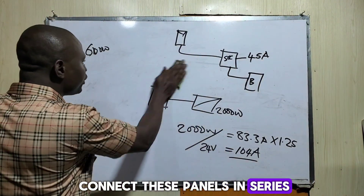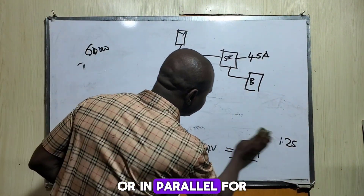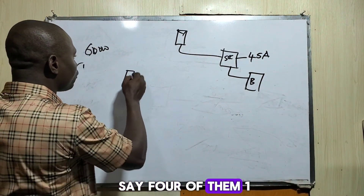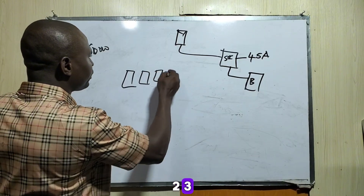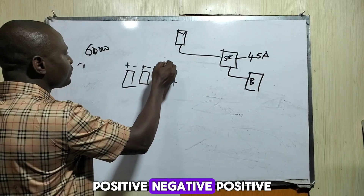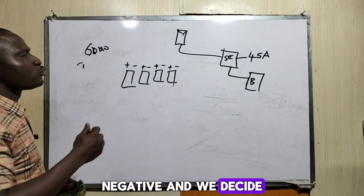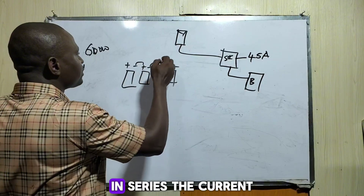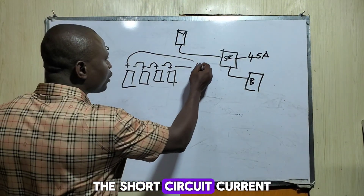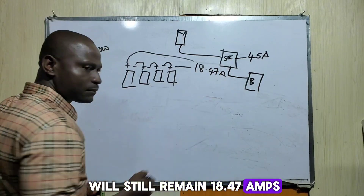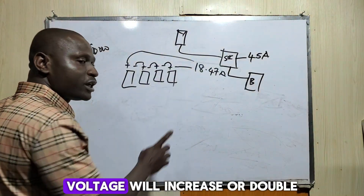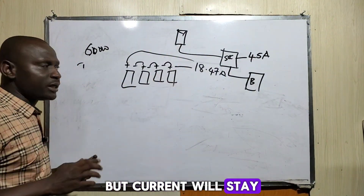What if we connect panels in series or in parallel? If we have four panels connected in series, the current will still remain the same — the short-circuit current stays at 18.47 amps. In series connection, voltage will increase or double, but current will still be the same.